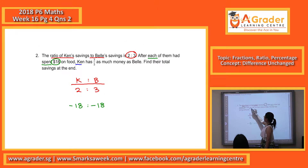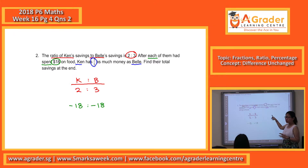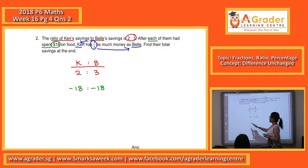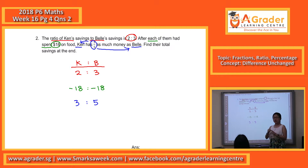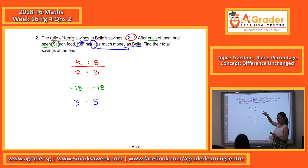Then the next piece of information: Can has 3/5 as much money as Bell. So as we learned previously, the numerator follows the first person mentioned and the denominator follows the second. So Can will be 3 units and Bell will be 5 units — giving us the ratio 3 to 5. Since they spend the same amount of money, this falls under difference and change. We need to look at the difference in units at the start and at the end.